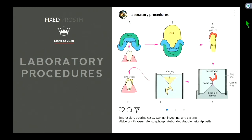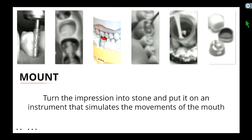That's where we pick up in terms of our laboratory procedures. If you look on the screen, step A was our tray and our impression — we make a mold of the tooth essentially. From that point, the next step is to pour that impression into some sort of stone, turn the impression in the stone, and then put it on an instrument that simulates the movements of the mouth, which is what we call an articulator.